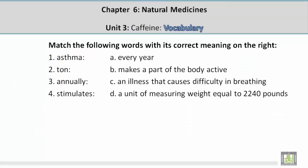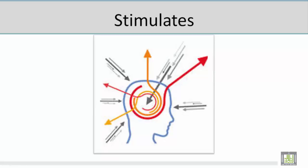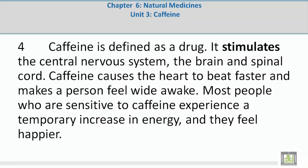Vocabulary word 4: Stimulates. The correct meaning is B — makes a part of the body active. Mohamed describes a picture showing ideas coming into the brain, making it active — that's what stimulates means. In context: 'It stimulates the central nervous system, the brain and spinal cord.'